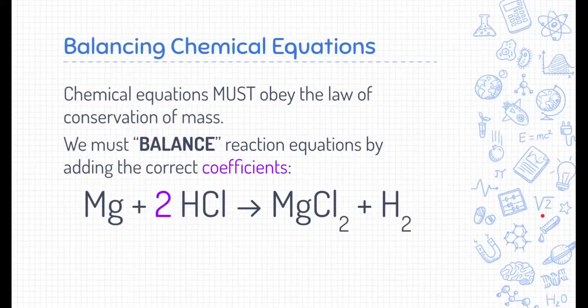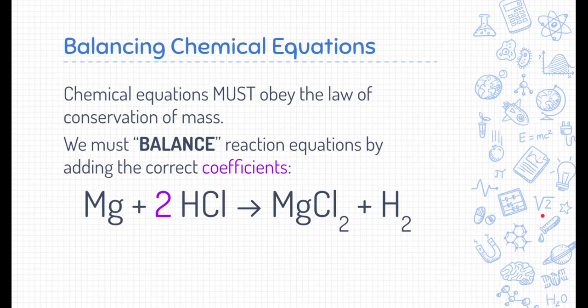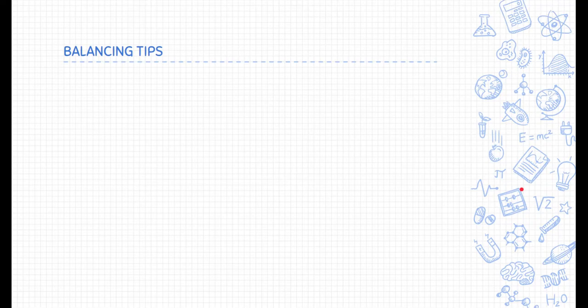But how do we do that? We do that doing a process called balancing a reaction. And that's what we did. By adding that coefficient, we balance a reaction. And we're expected to know how to do this. Here are a few balancing tips in order to balance the reaction.